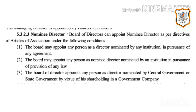Nominee Director: The board of directors can appoint a nominee director as per the directive of the articles of association under the following conditions: the board may appoint any person as a director nominated by any institution in pursuance of any agreement; the board may appoint any person nominated by an institution in pursuance of any law; or the board may appoint any person nominated by the Central Government or State Government by virtue of shareholding in a government company.